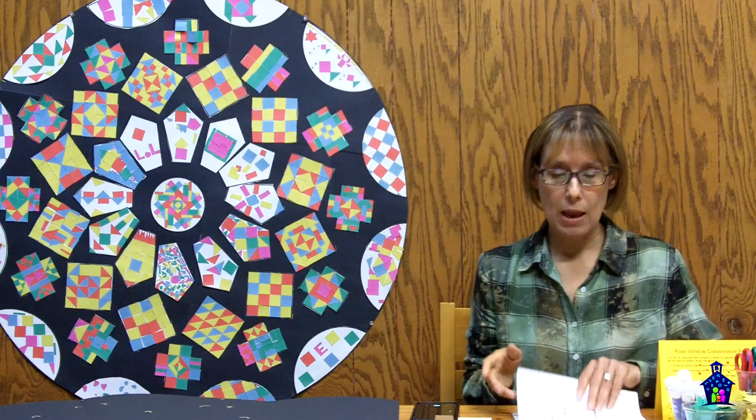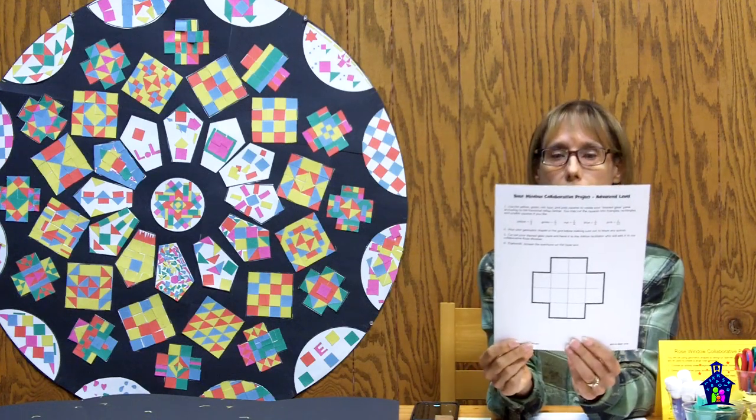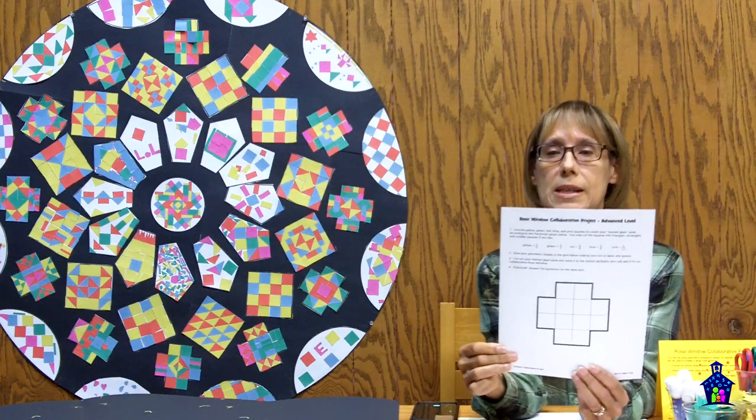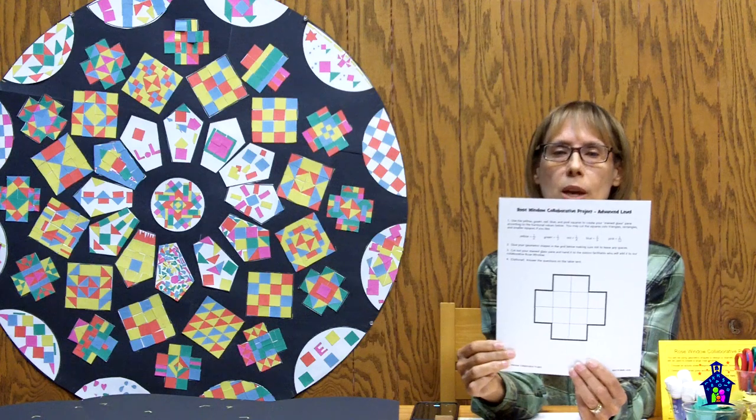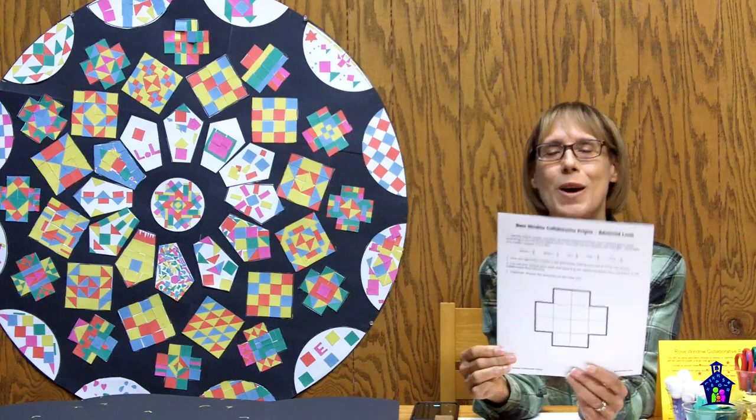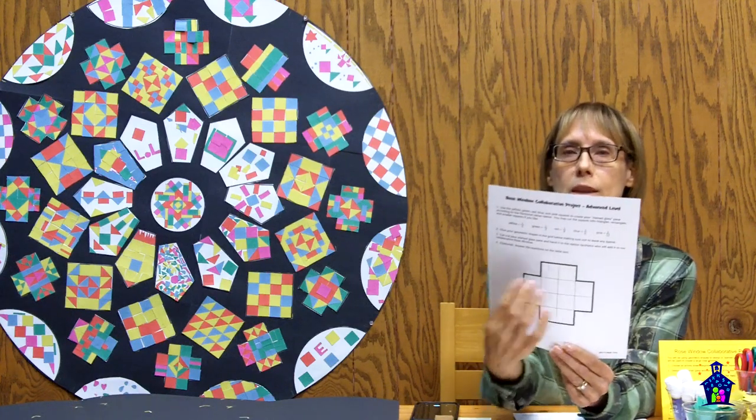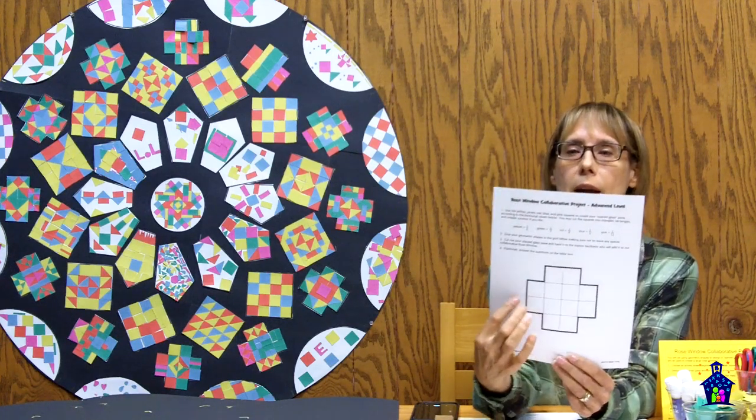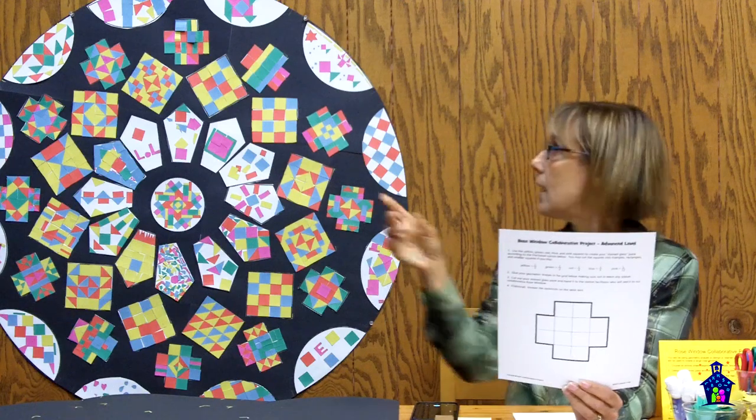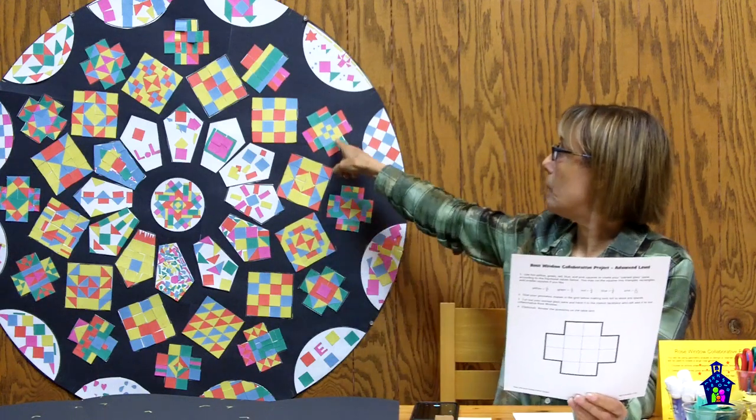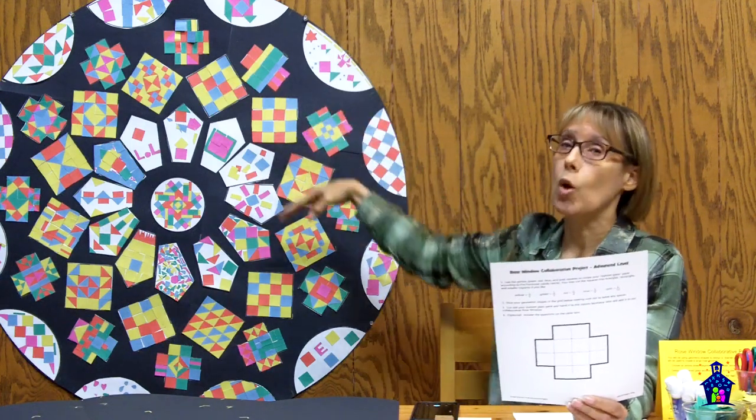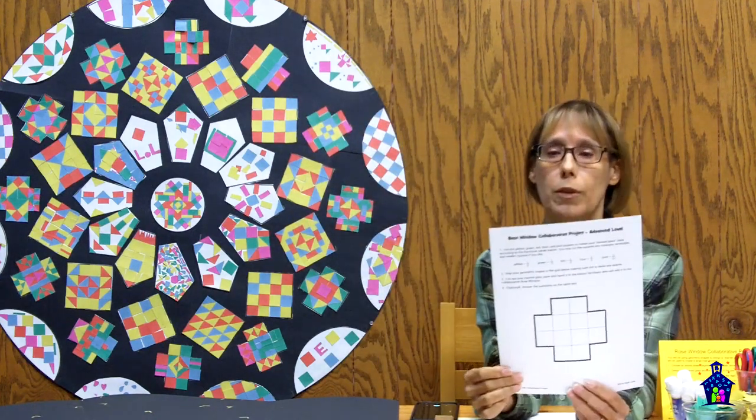So at the advanced level, their activity sheet looks like this. It's sort of a cross. And they have 12 squares that they're working with. And one sixth needs to be yellow, one third is green, one fourth is red, one sixth is blue, and one twelfth is pink. And so they need to manipulate their squares to figure out that if one sixth is yellow, then that means I need two yellow squares. And again, they get to cut theirs into the different shapes. But one sixth will always be yellow in all of them and so forth.